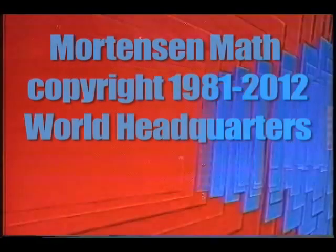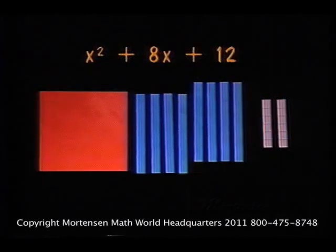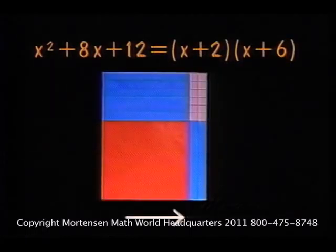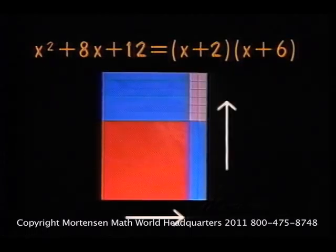Let's do some more. x² + 8x + 12 equals (x + 2) and (x + 6).